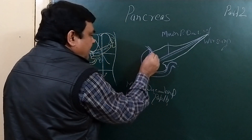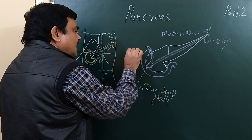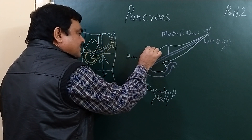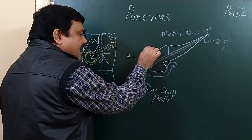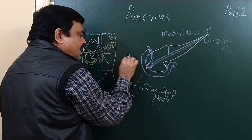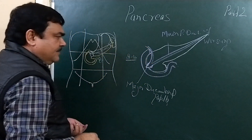It lies about 8 to 10 cm from the pylorus. Here is the position of the pylorus — from here to here, this is 8 to 10 cm.